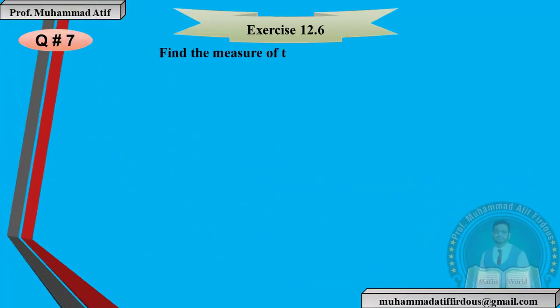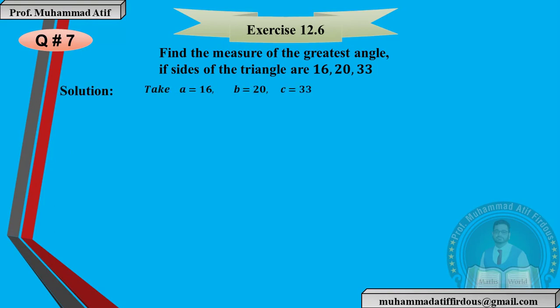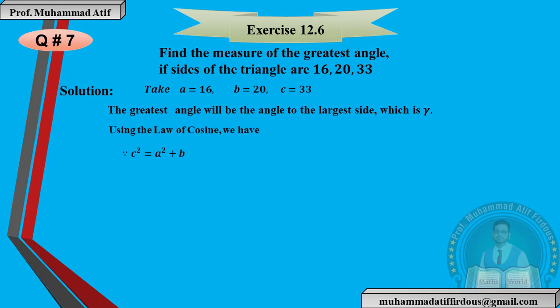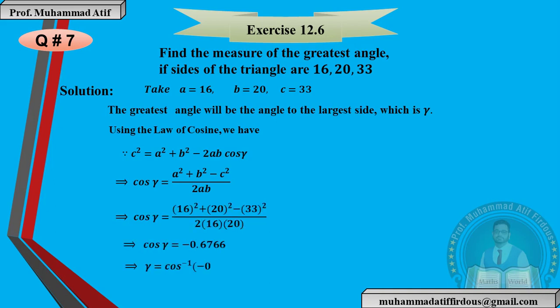Another question asks for the measure of the greatest angle. The greatest angle is opposite the greatest side. Looking at the sides — naming them a, b, c — the greatest side is c, so the angle we find is γ. Apply the cosine rule again.